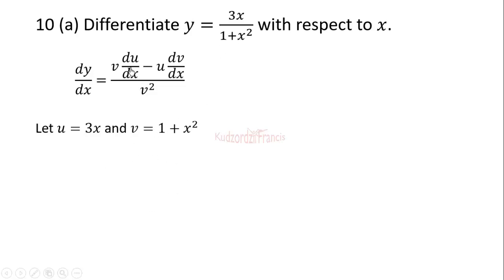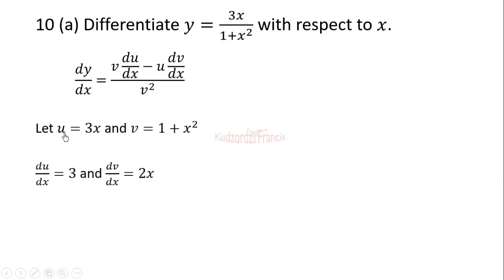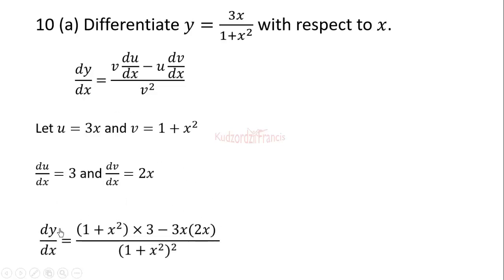We find du/dx and dv/dx. Differentiating u with respect to x gives 3, and differentiating v with respect to x gives 2x. Substituting into the quotient rule formula gives dy/dx equal to (1 plus x squared) times 3 minus 3x times 2x, all divided by (1 plus x squared) squared.